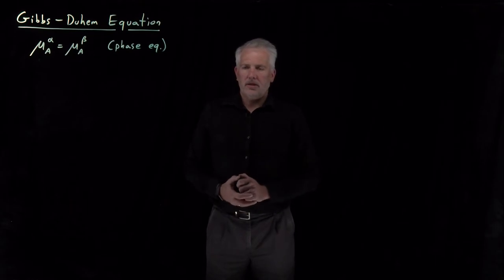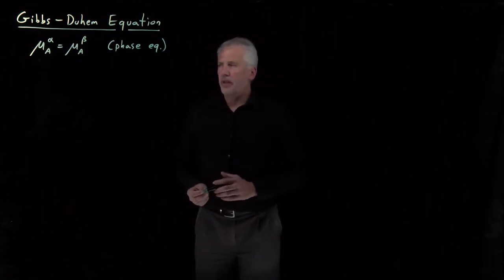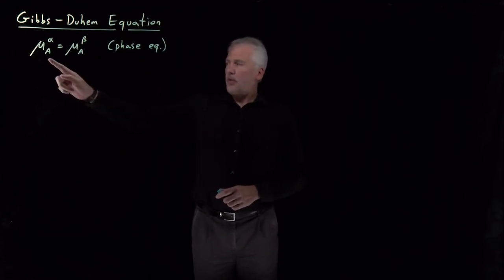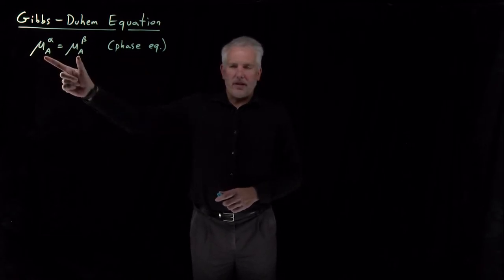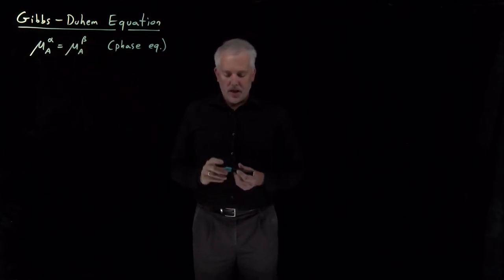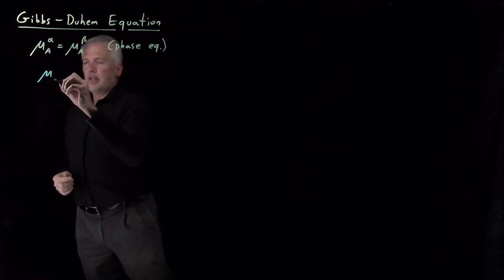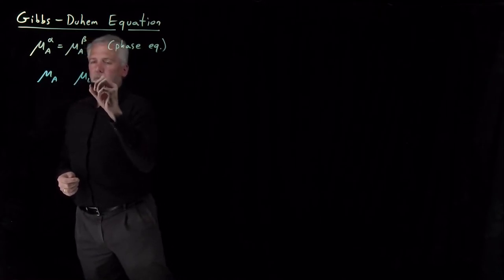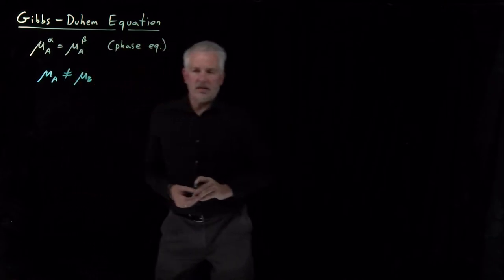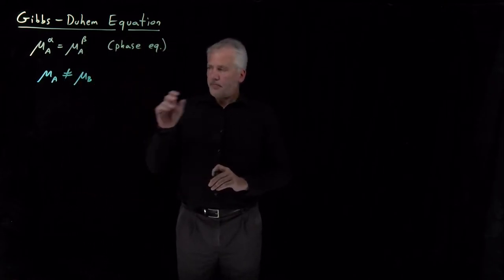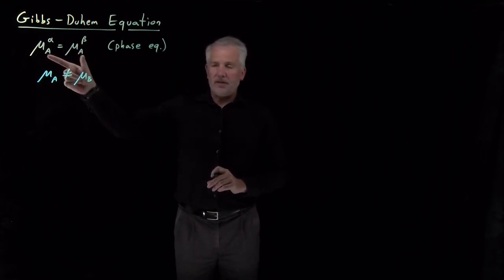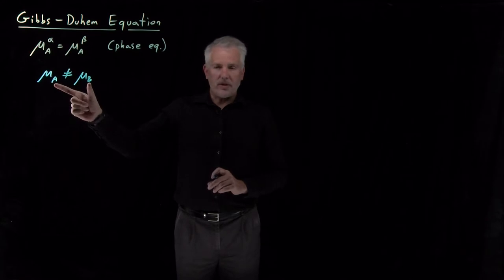Let's look a little closer at this distinction: the condition for phase equilibrium, where the chemical potential of a component in two different phases has to be equal. Alpha and beta here are two different phases. But that's different from saying the chemical potential of A and the chemical potential of B — two different components — those two are not necessarily the same as each other.